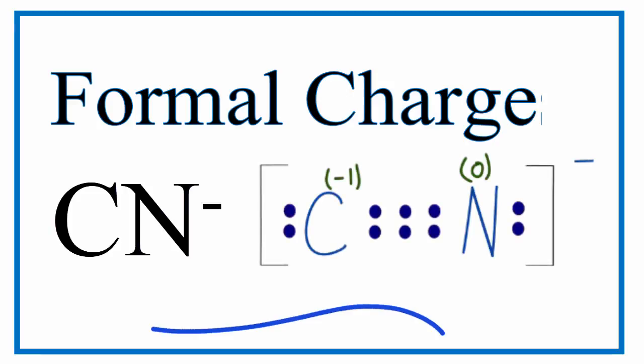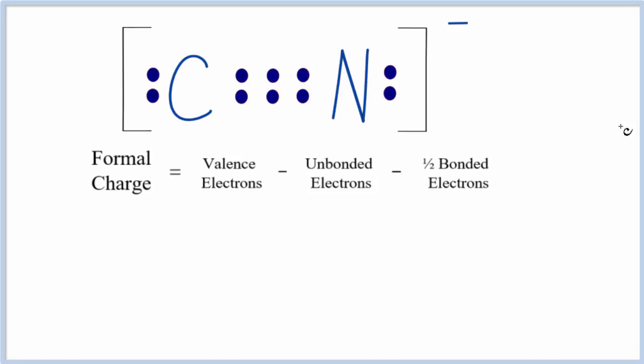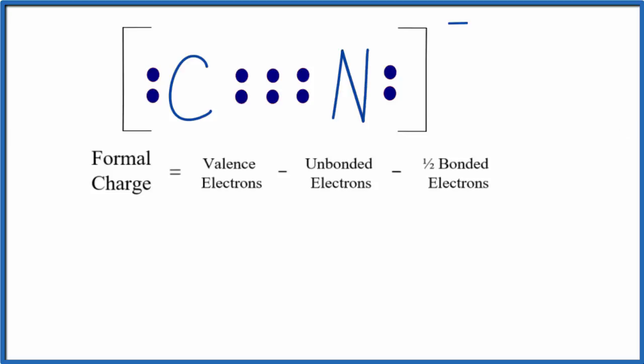To calculate formal charges for CN-, the cyanide ion, we'll first start with the correct Lewis structure. We've used all 10 valence electrons, and you can see carbon has an octet, and then the nitrogen also has an octet. So this is the correct Lewis structure.